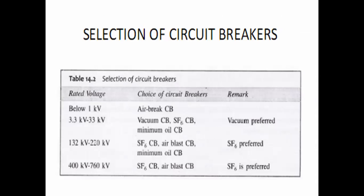For the selection of a circuit breaker for a particular application, we have a chart. If the working voltage is below 1 kV, that is below 1000 V, we can use an air circuit breaker. If the voltage is about 3.3 kV to 33 kV, then we can use a vacuum circuit breaker, an SF6 circuit breaker, or a minimum oil circuit breaker — but preferably, in that working voltage range, we are using the vacuum circuit breaker.